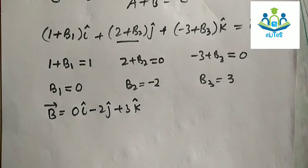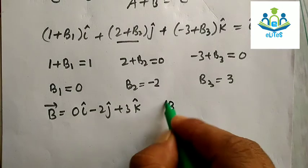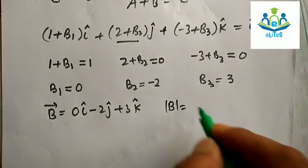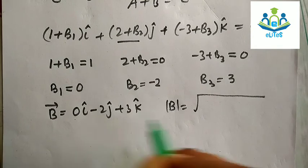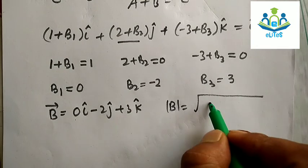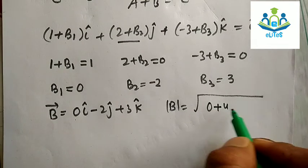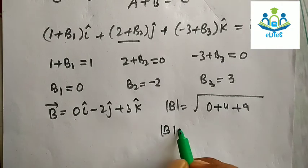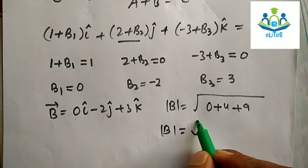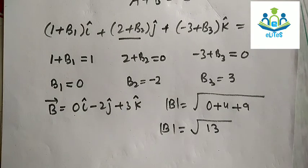The magnitude of vector b is √(b1² + b2² + b3²) = √(0 + 4 + 9) = √13.